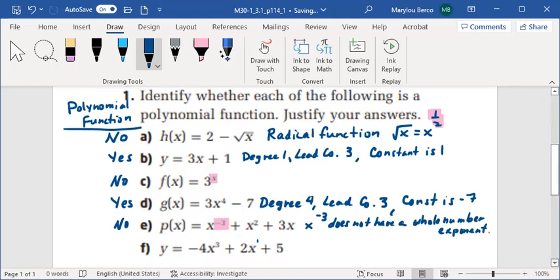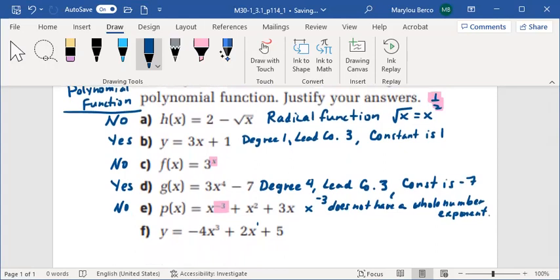f, y = -4x^3 + 2x + 5. Well, if we take a look, the degrees are indeed in descending order. It is of degree 1. Sorry, degree 3.